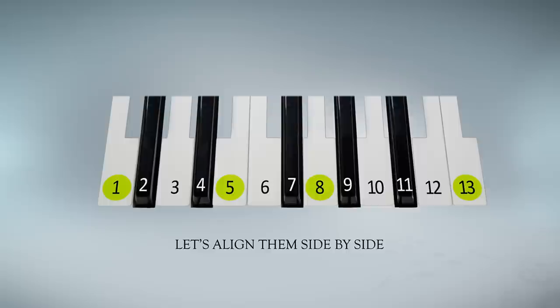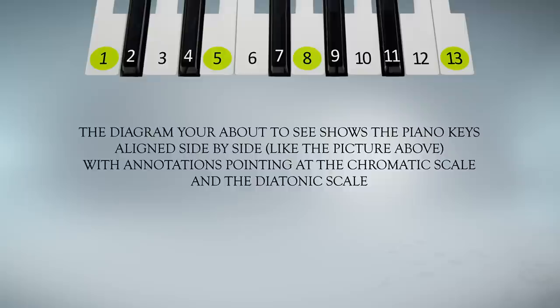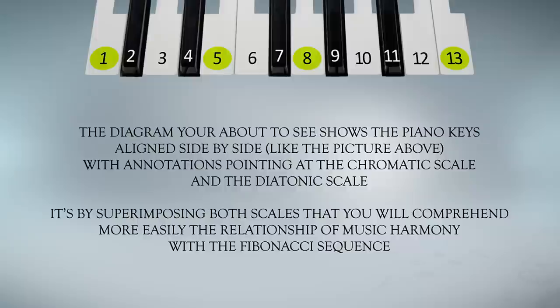The diagram you're about to see will show the piano keys aligned, like the picture above, with annotations pointing at the chromatic scale and the diatonic scale. It's by superimposing both scales that you will comprehend more easily the relationship of music, harmony, and the Fibonacci sequence.